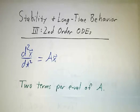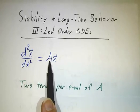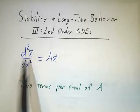Now, we've seen that whenever we have a system like that, every eigenvalue of A and every eigenvector gives you two terms in the expansion of x.